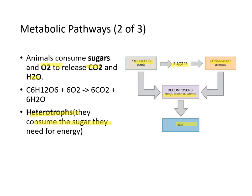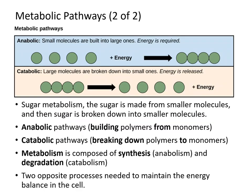Metabolism occurs in many different, very complicated metabolic pathways. Sugar is made from smaller molecules — CO2 and water — and then broken down again. Anabolic pathways involve the building up of polymers from monomers using energy. Catabolic pathways involve the breaking down of polymers into monomers to produce energy. Metabolism is composed of these synthesis and degradation processes, and these two opposite processes are needed to maintain energy balance in the cell.